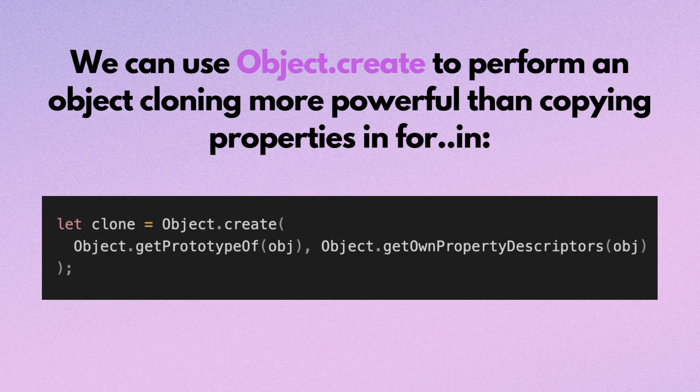We can use Object.create to perform object cloning more powerfully than copying properties in a for...in loop. This call makes a truly exact copy of an object, including all properties — enumerable and non-enumerable, data properties, setters, getters — everything, and with the right prototype.